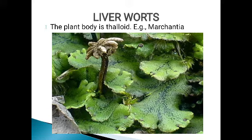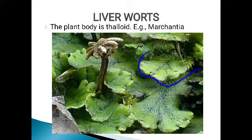The plant body of liverworts is thalloid. What you see in this picture is Marchantia; Riccia is also there. So Marchantia and Riccia are examples of liverworts. The plant body is thalloid in nature — thalloid means it is thallus-like. It is not differentiated into stem, root, and leaf; only stem-like, leaf-like, and root-like structures are present, which we call the thallus.